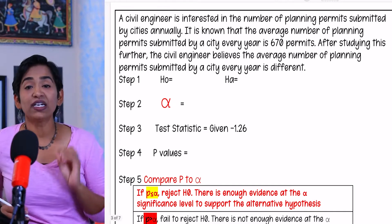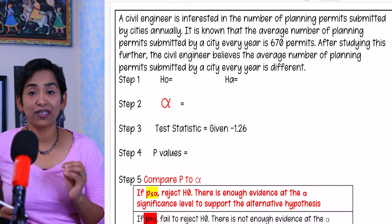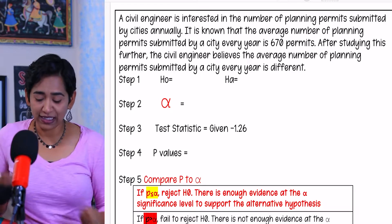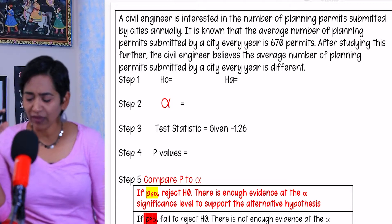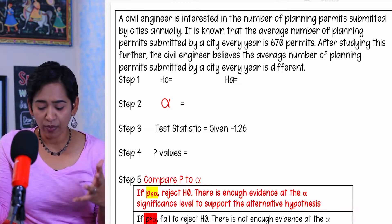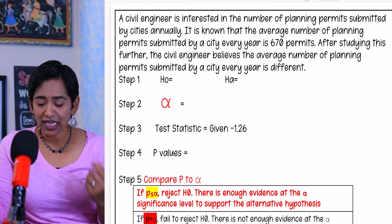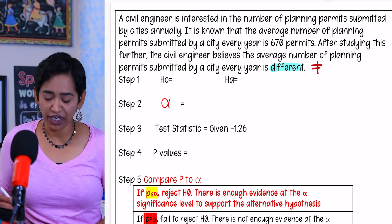Let's take a look at the first problem. A civil engineer is interested in the number of planning permits submitted by a city annually. It is known that the average number of planning permits submitted by the city every year is 670. The civil engineer believes the average number of planning permits submitted by the city every year is different. Keep in mind, the word 'different' means simply not equal to.